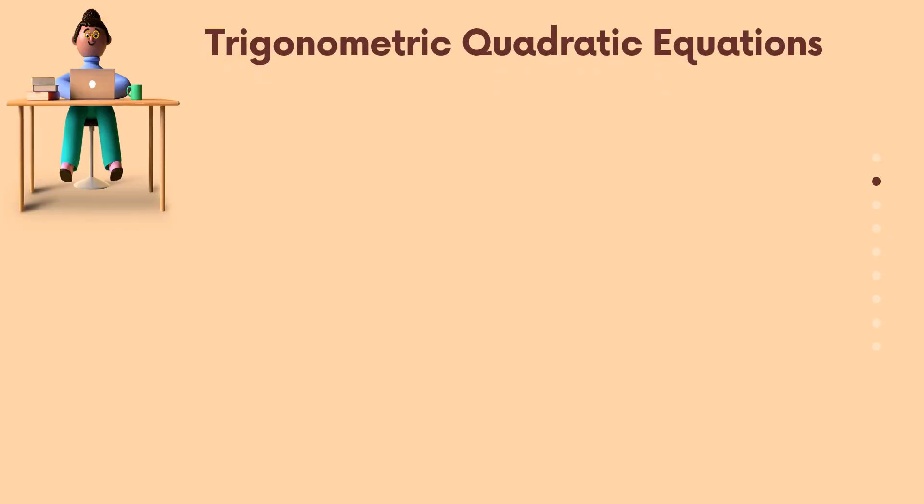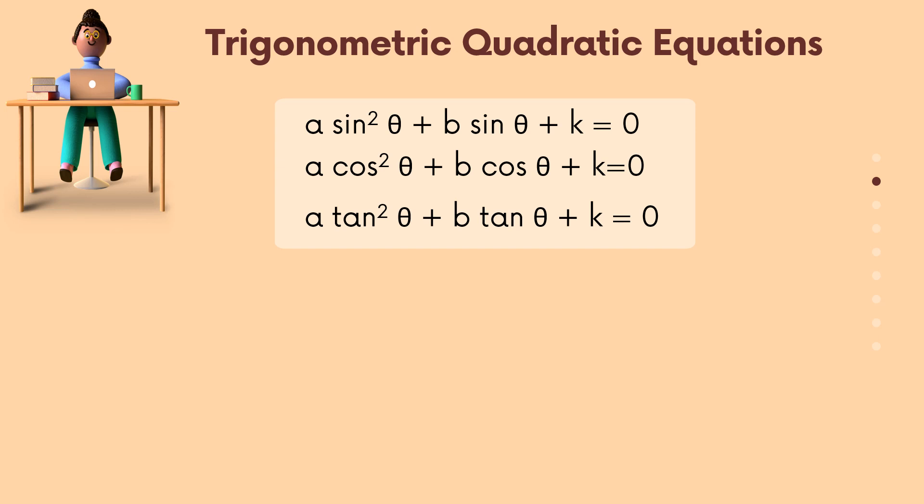Let's see trigonometric quadratic equations. Firstly, a sin²θ + b sin θ + k = 0. Secondly, a cos²θ + b cos θ + k = 0. And lastly, a tan²θ + b tan θ + k = 0.